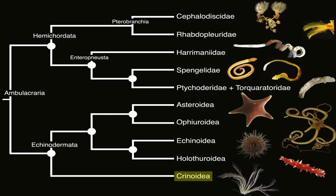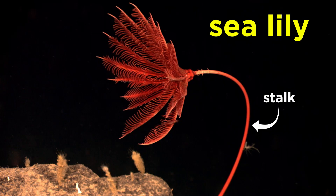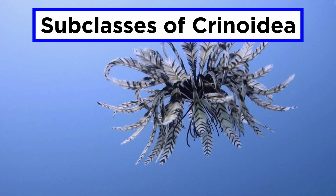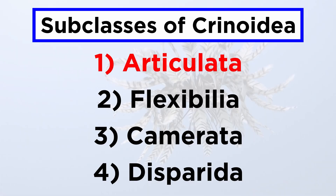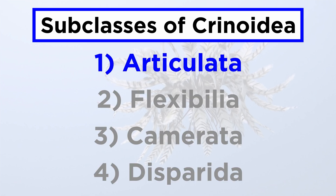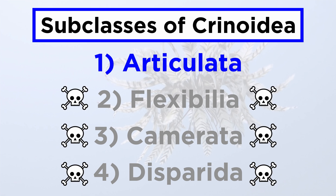In this tutorial, we will cover the least diverse of the echinoderm classes: the crinoids. The stalked members of class Crinoidea are known as sea lilies, while the unstalked members are known as feather stars. This class contains four subclasses — Articulata, Flexibilia, Camerata, and Disparida. Of these, only the members of subclass Articulata are extant; the other three are all extinct.